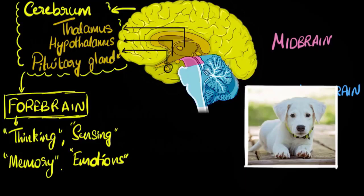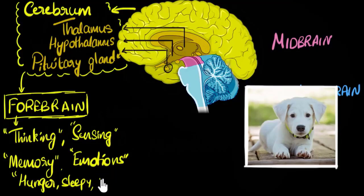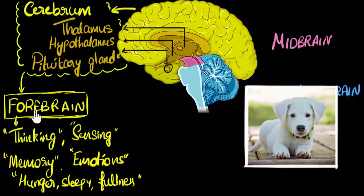Besides thinking, sensing, memory, and emotions, the forebrain also controls feelings like hunger, thirst, sleepiness, and the feeling of fullness after a meal. All of that comes from your forebrain — specifically from certain parts of it. These are the main functions of your forebrain.